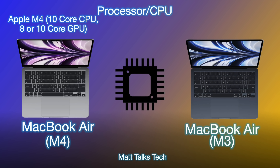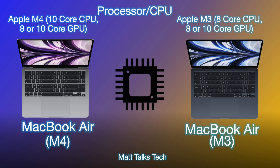The processor and CPU — this is where things do change. The MacBook Air M4 has a 10-core CPU: six efficiency cores and four performance cores. The M3 had an eight-core CPU made up of four efficiency cores and four performance cores. So Apple have added two more efficiency cores to the M4 chip this time around.